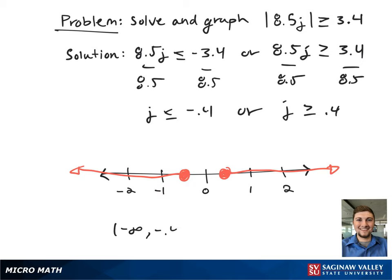In interval notation, this looks like (-∞, -0.4] in union with [0.4, ∞).